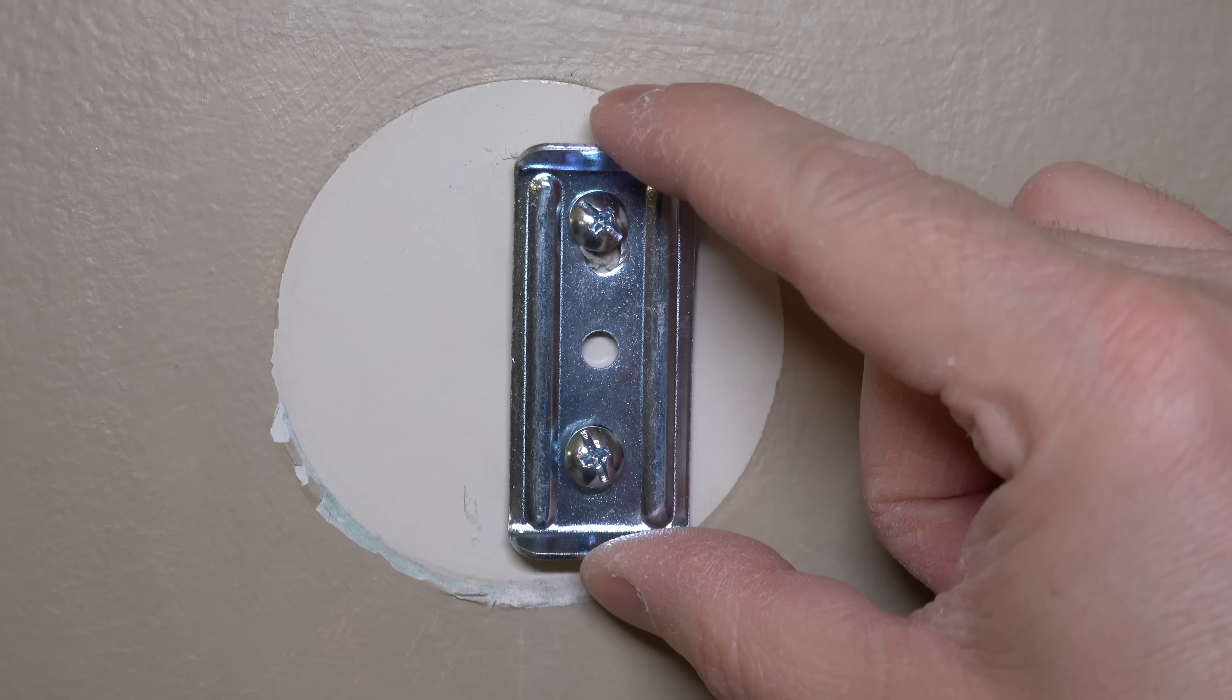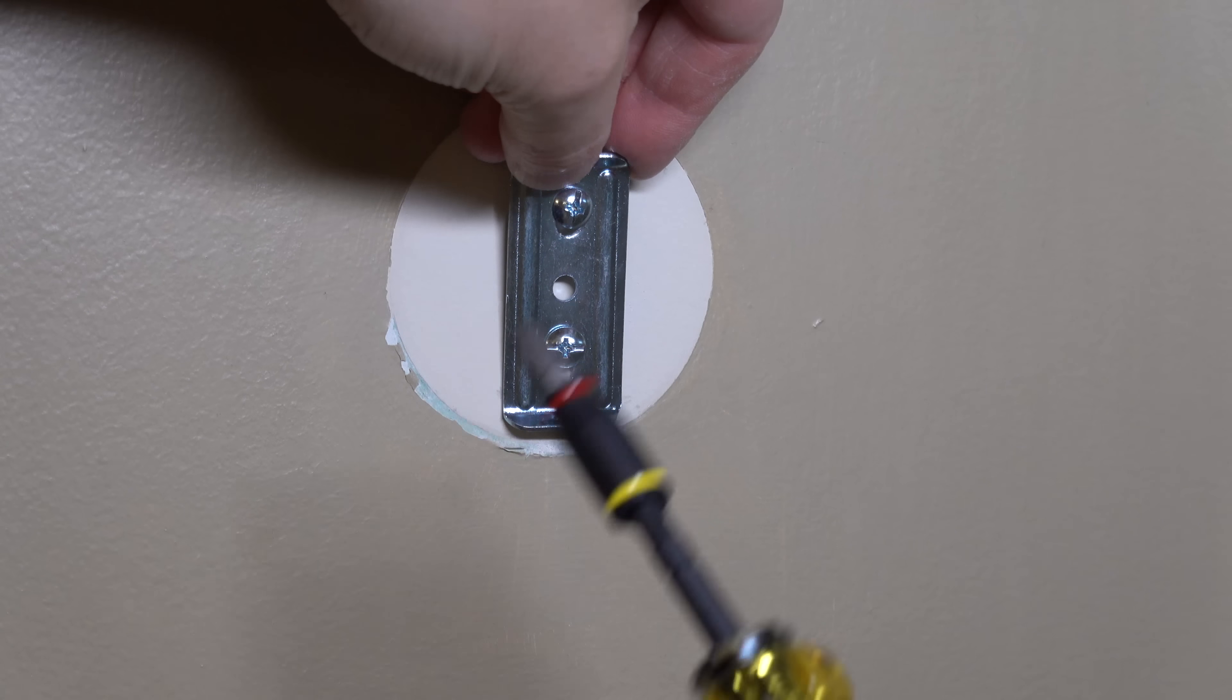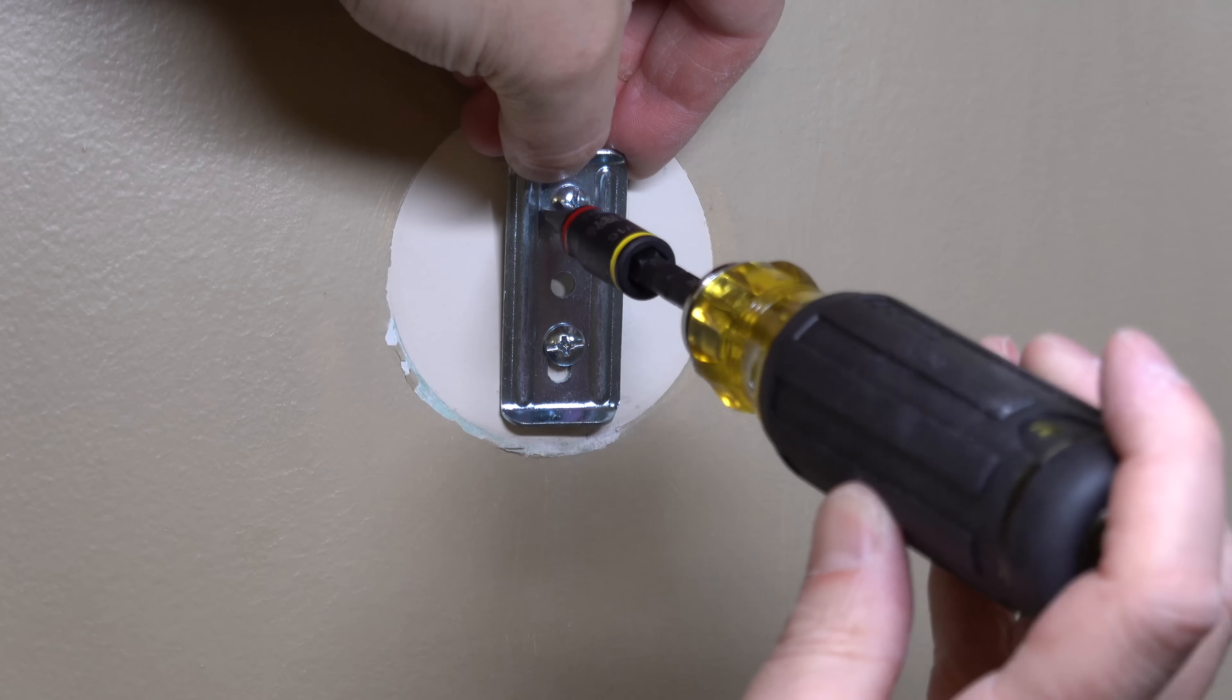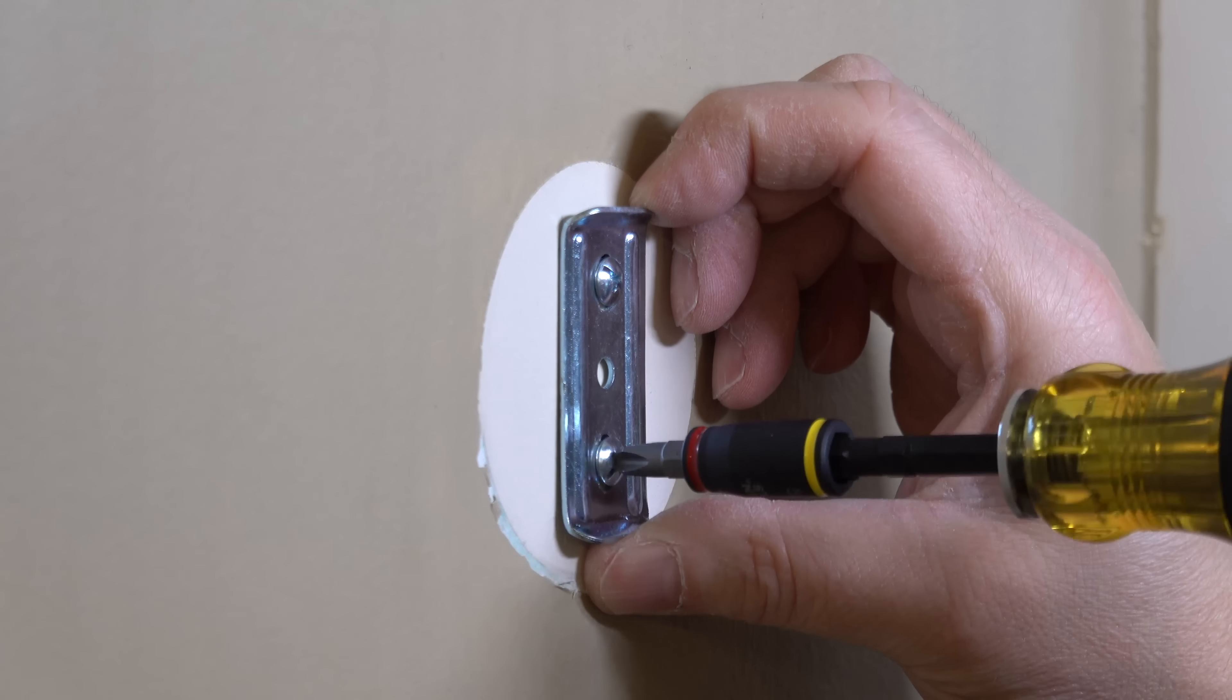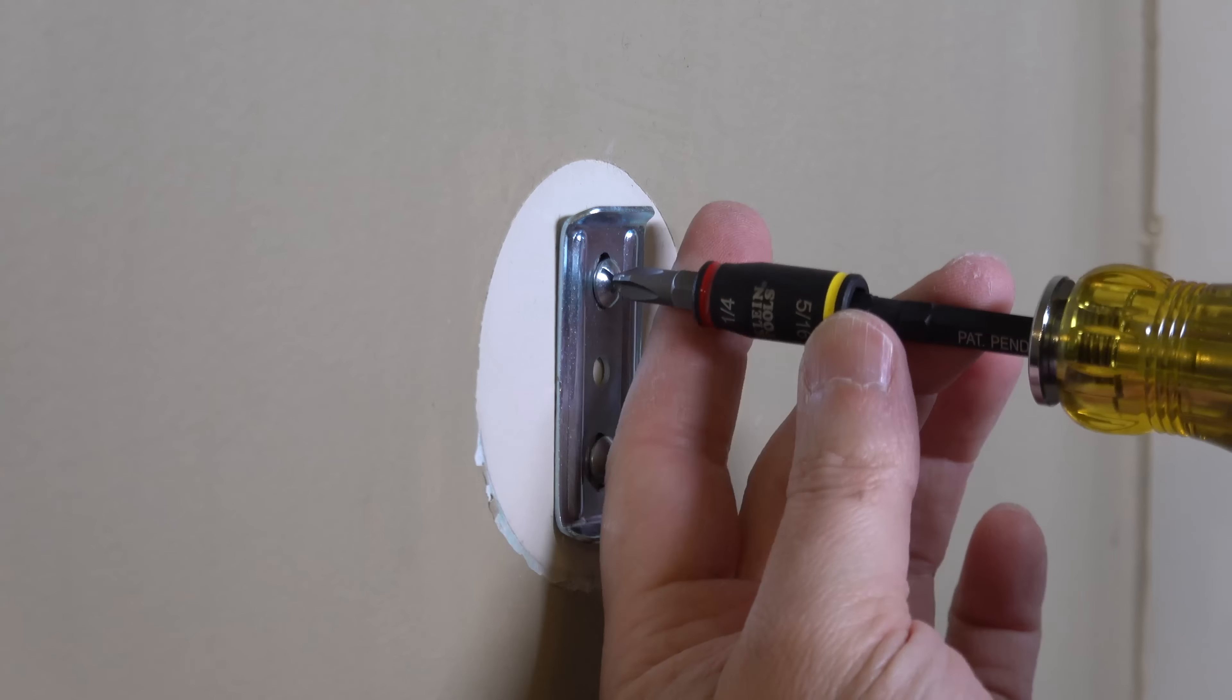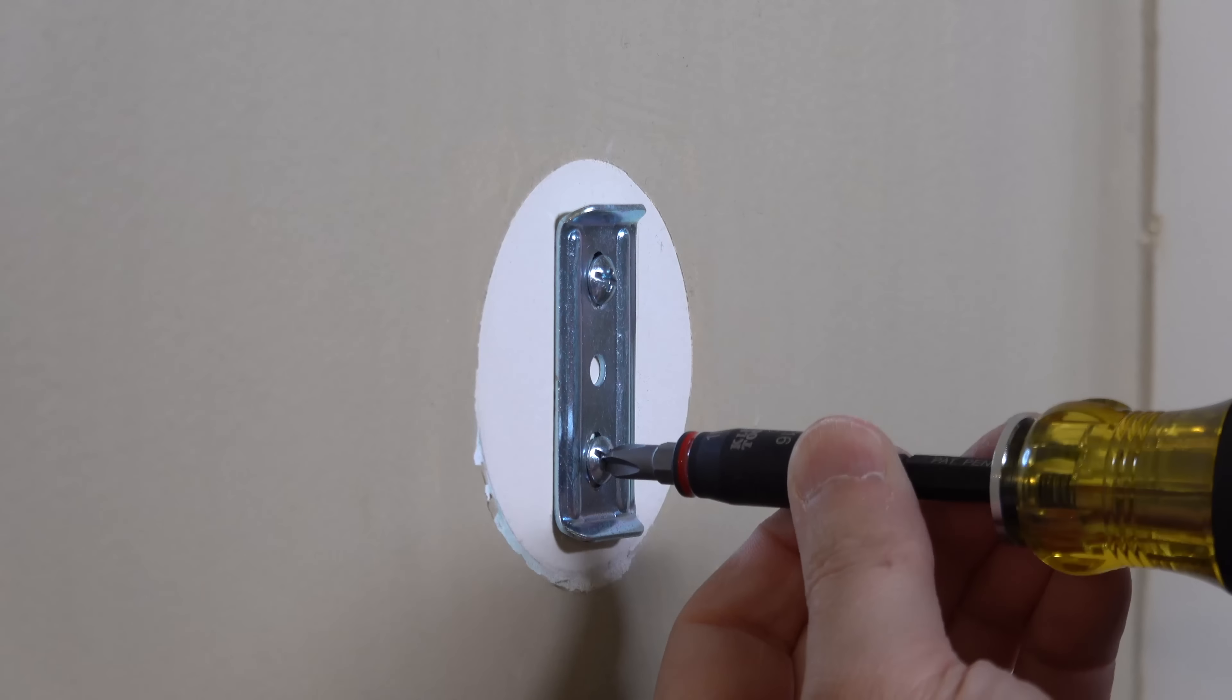But there's another benefit to using these toggle bolts. You can see that you can move the bracket around a bit so you can get it perfectly centered or up and down to the exact position that you want. As you finish tightening up these screws it's going to feel really good and that bracket is going to be rock solid.